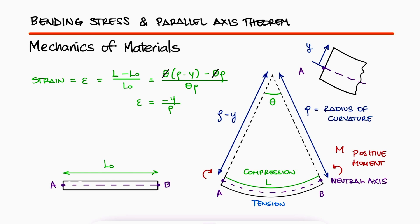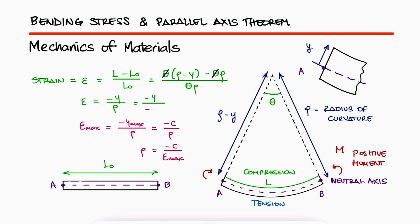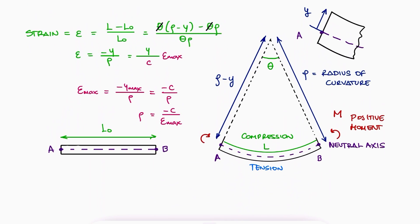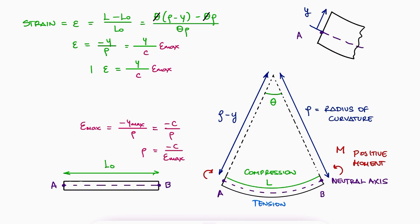This strain equation is true for any value of y, and we know that the maximum strain would be found for the largest y value, which is the farthest distance from the neutral axis. This would either be at the top or at the bottom, and that max distance y is usually called c. Solving for rho in the maximum strain expression and substituting it in the strain equation, we see that the strain for any value y is equal to y over c times the maximum strain. If we multiply this equation by the elastic modulus of the material, we find that the stress is equal to y over c times the maximum stress.